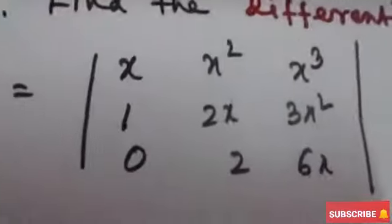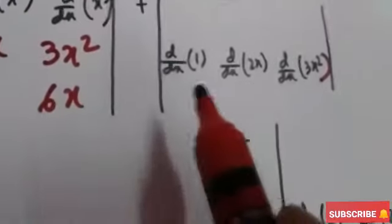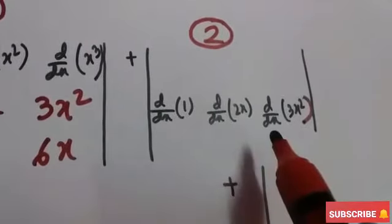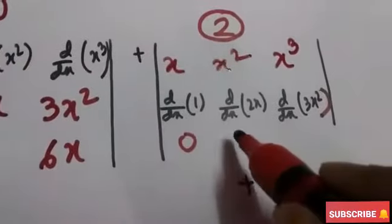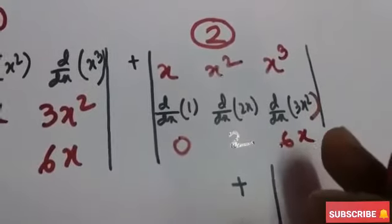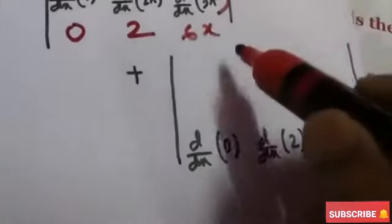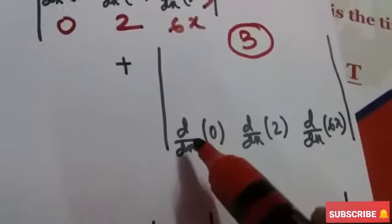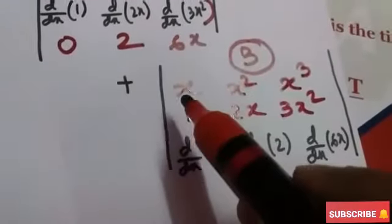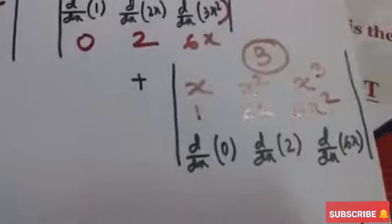So the second row is differentiated: d/dx of 1, d/dx of 2x, d/dx of 3x². The first row and third row remain unchanged. For the third determinant, the third row is differentiated individually: d/dx of 0, d/dx of 2, and d/dx of 6x. The rest — first row and second row — remain unchanged.